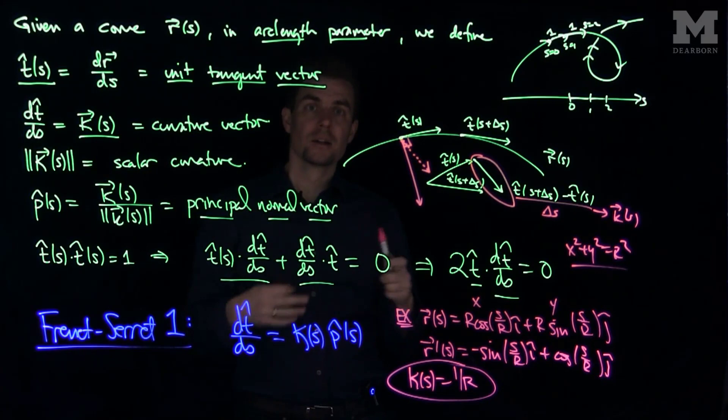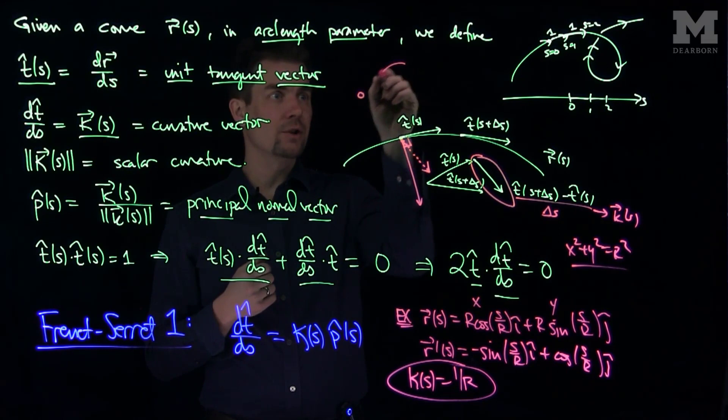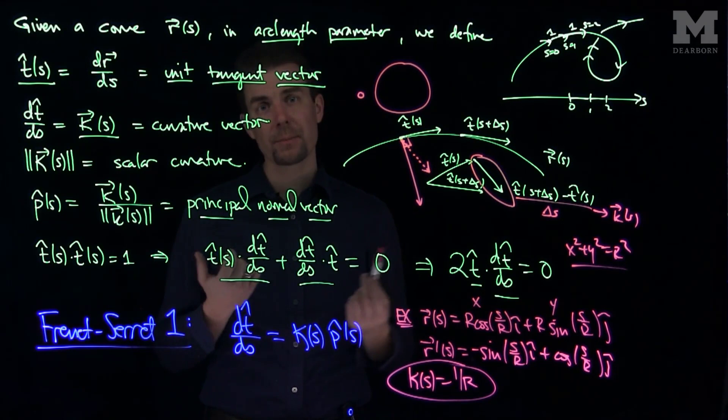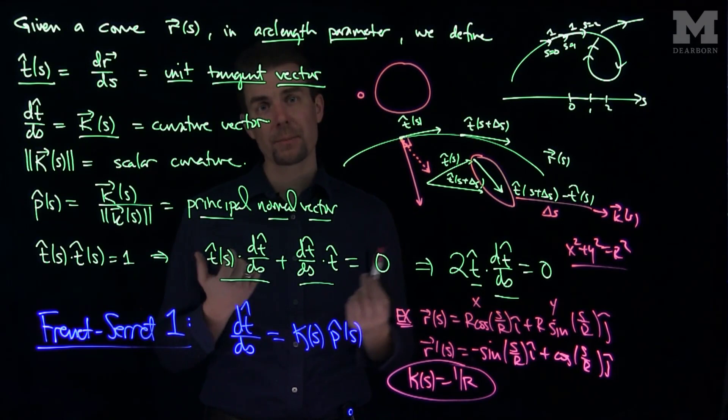Likewise, if I draw a really, really small circle, we can see that it has very, very large curvature, whereas a larger circle becomes more flat and has less curvature. So the curvature of a circle of radius r is the reciprocal of the radius. And this gives us a very important relationship that we'll see in future videos. Thank you very much.